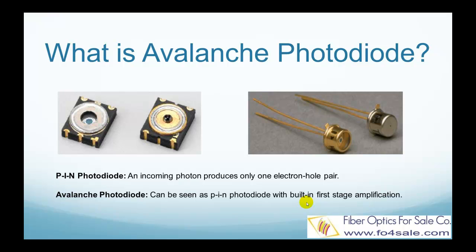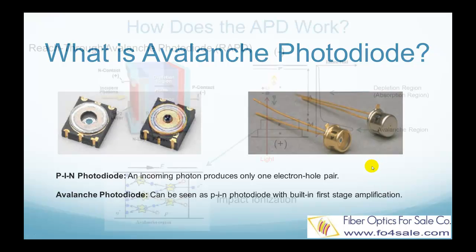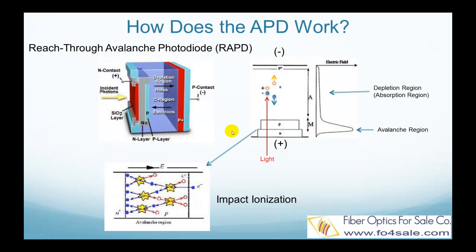In general, the higher the reverse voltage, the higher the gain. Most commonly available APDs are made from silicon and use a so-called reach-through structure, where light enters from inside of the silicon. The top picture shows the structure of a typical reach-through avalanche photodiode, also called RAPD.